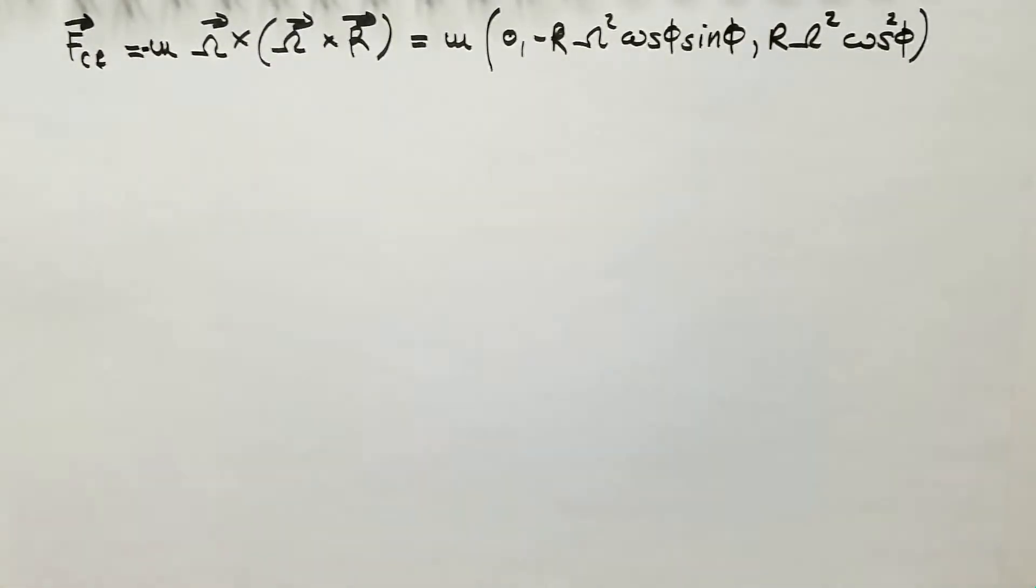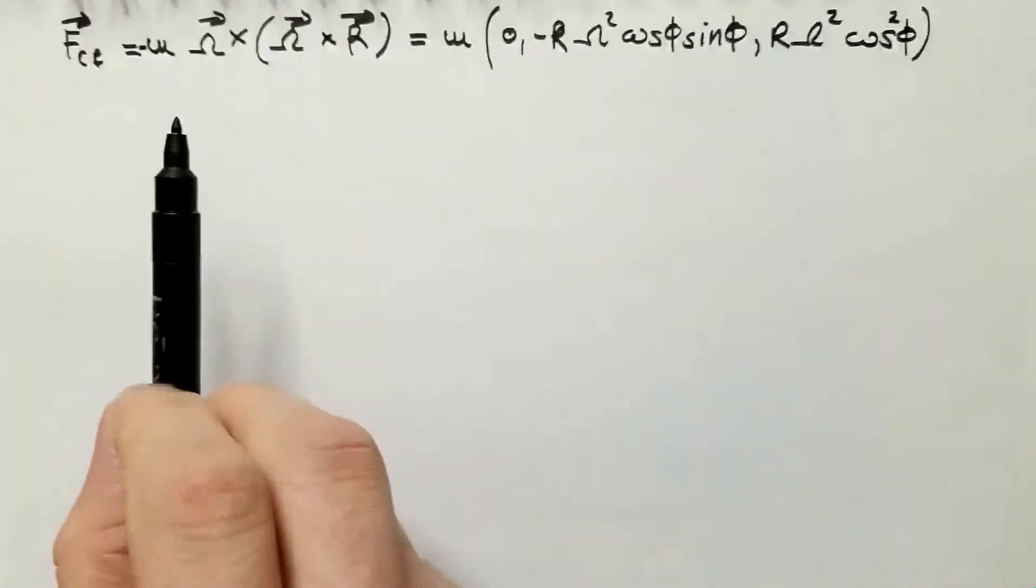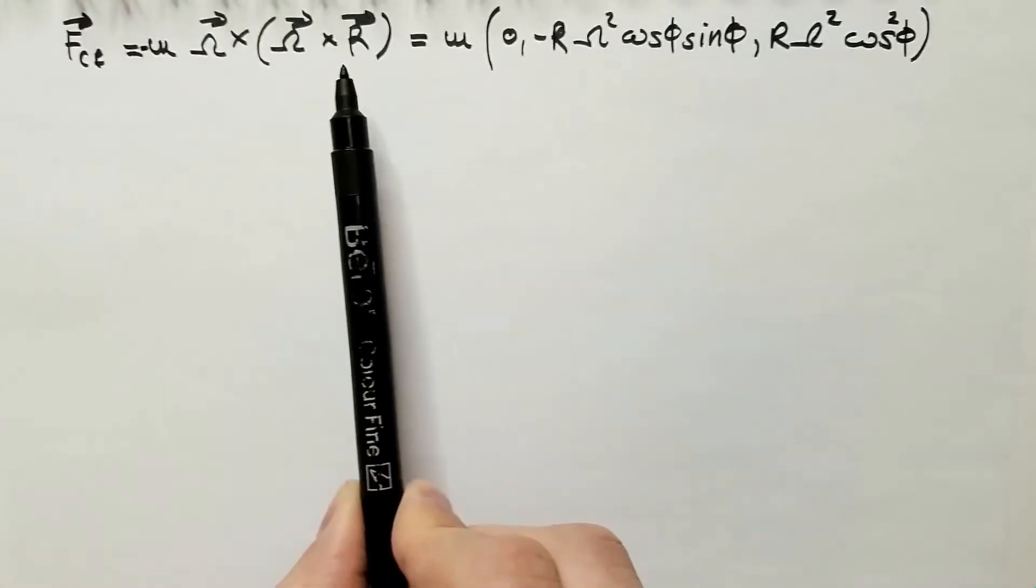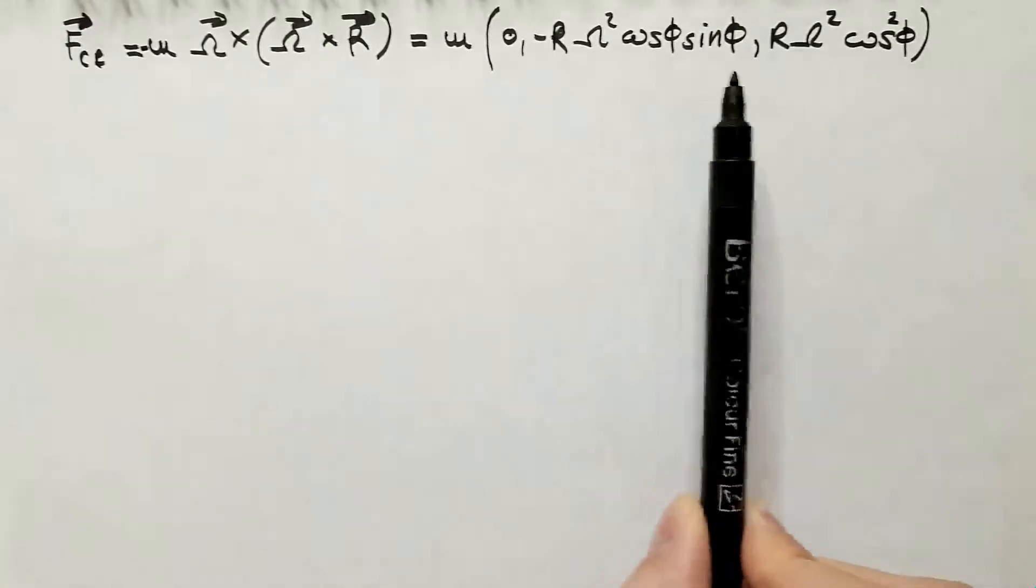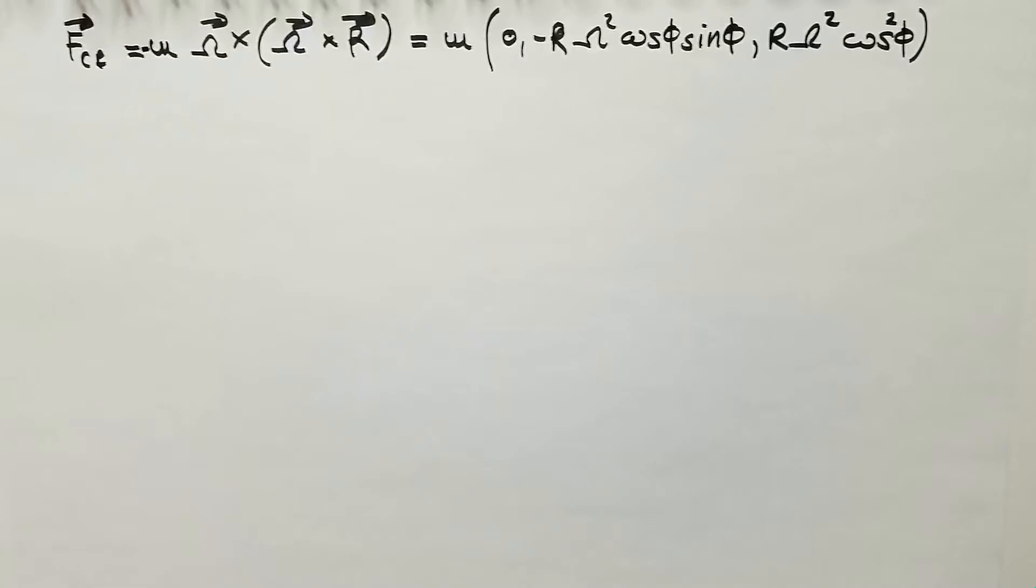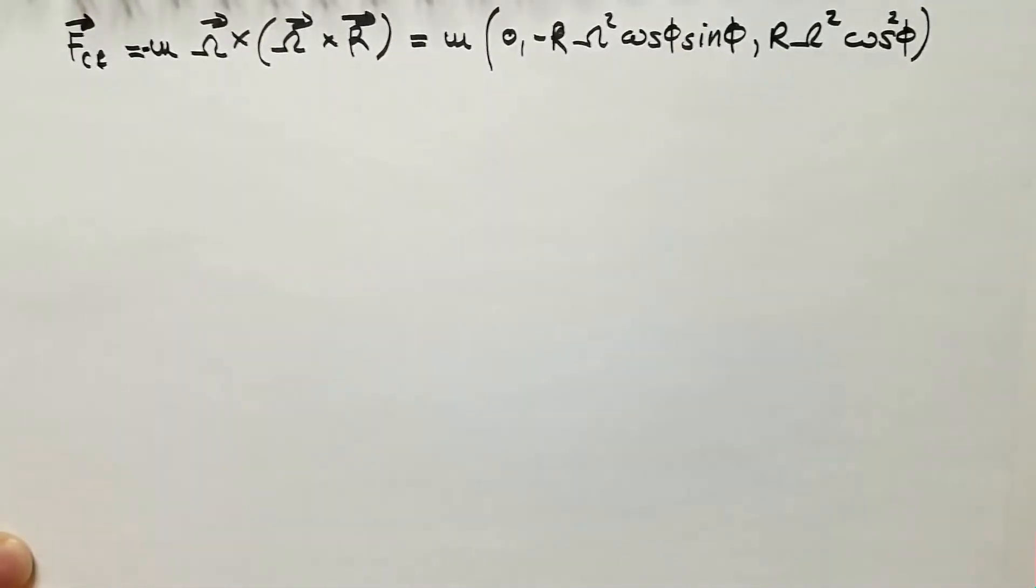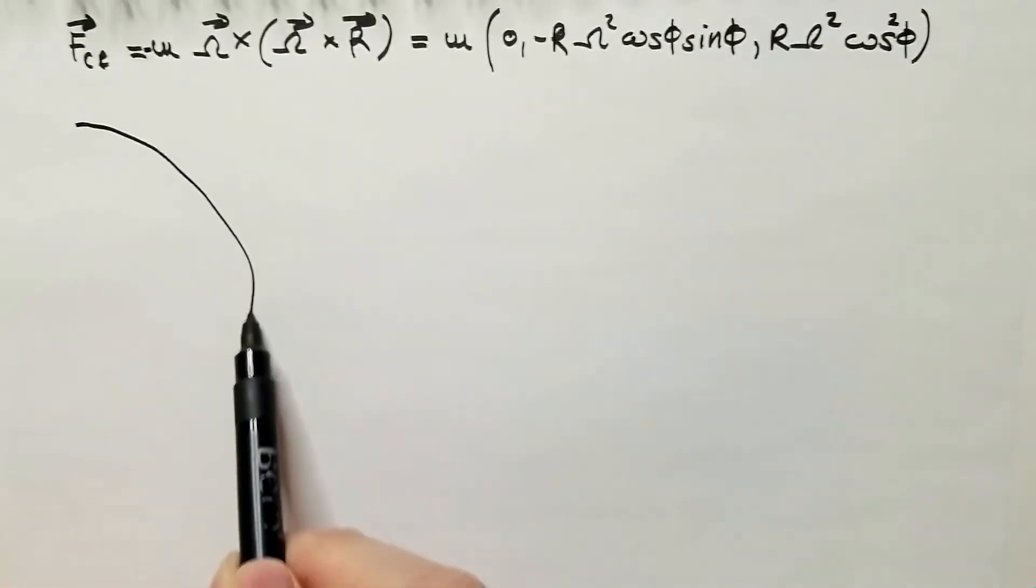This is where we concluded last time. The centrifugal force is this triple cross product, where m is mass, omega is angular velocity of the Earth, and r is radius vector of the Earth, or in the component form, we got these three components, where phi is latitude. So, I highly recommend you check that video, link is in the description. Today, we want to find the deviation angle between apparent gravity and true gravity, and the answer is already in these expressions, but we need to know how to extract it. To do that, I will take, let's say, this to be half of my Earth.